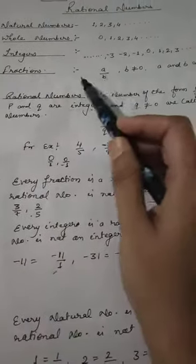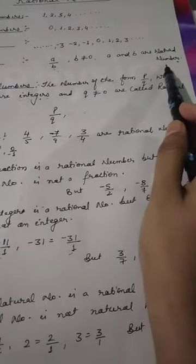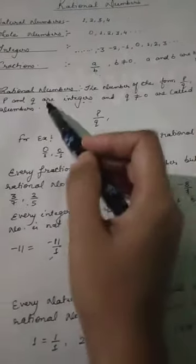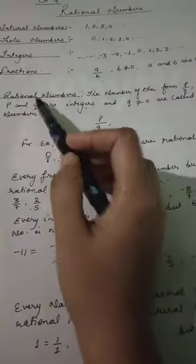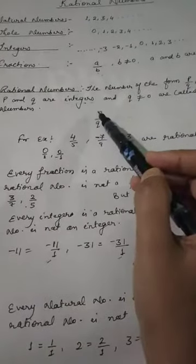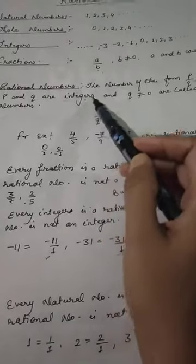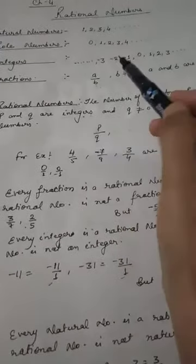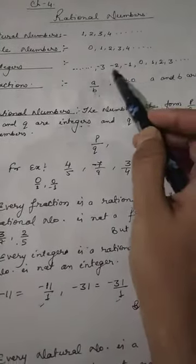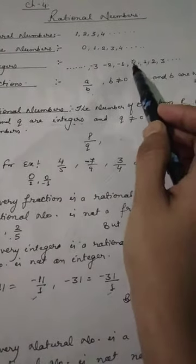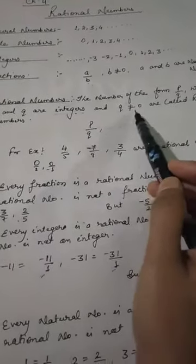Notice the difference between fractions and rational numbers. In fractions, a and b are natural numbers. But in rational numbers, p and q are integers — meaning p and q can be negative or positive numbers including 0. Only q will not be equal to 0.